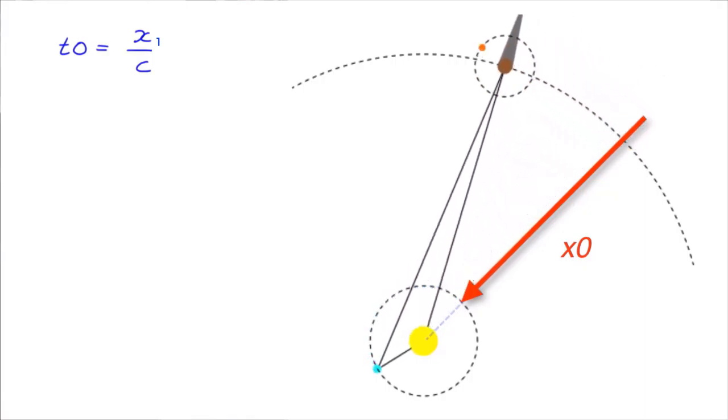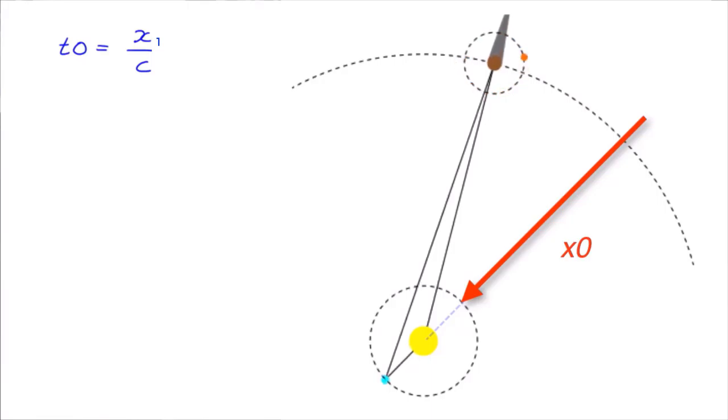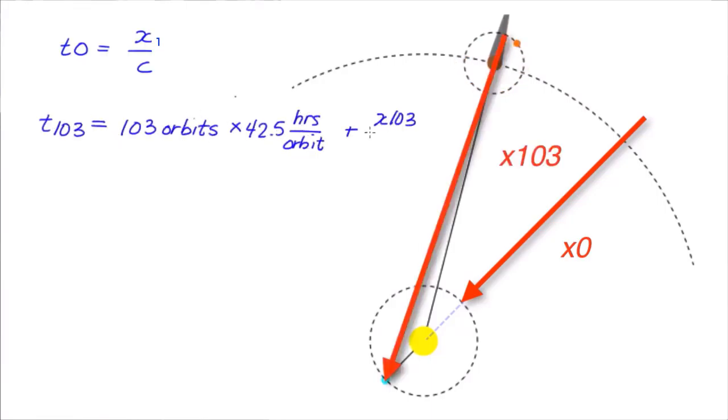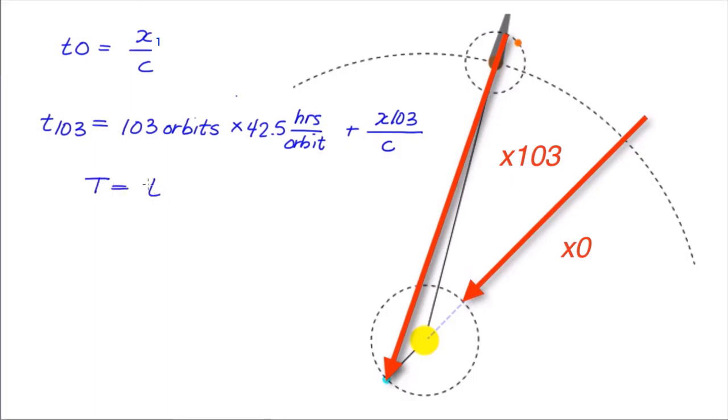Later, when Jupiter is in conjunction, the Earth sees the end of the 103rd orbit at a clock time of this. The first term is the time that it takes for Io to orbit 103 times, and the second term is the time that it takes for the light that signals the end of the 103rd orbit to travel to Earth. So the time of 103 orbits as seen from Earth is this.